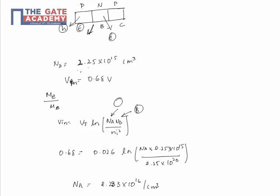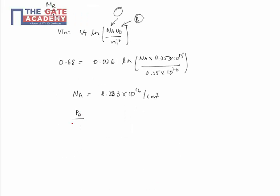The ratio of majority carriers in emitter to majority carriers in base is N_A/N_D = 2.283×10^16 / 2.25×10^15, which equals 10.1. So the answer is 10.1.